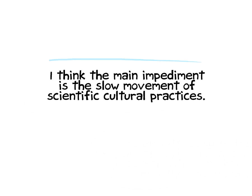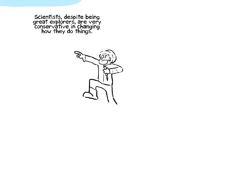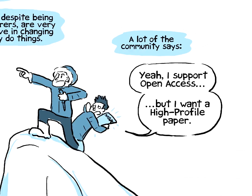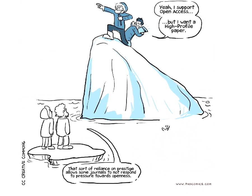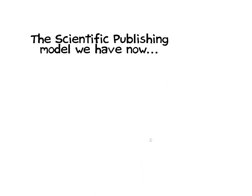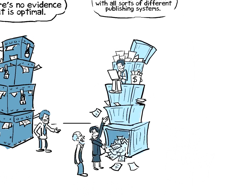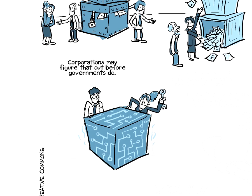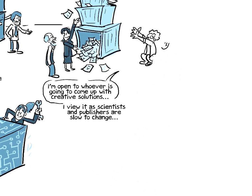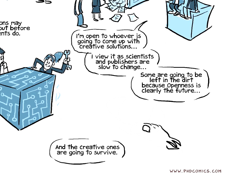I think the main impediment is the incredibly slow movement of scientific cultural practices. Scientists, despite being great explorers in terms of knowledge, are very conservative in terms of changing their practices. Lots of the community says they support openness, but they want a Nature paper. That reliance upon impact factor and the name of the journal does allow some journals to not respond to community pressure towards openness. The scientific publishing model we have now has no evidence that it is optimal. We need to experiment with all sorts of different scientific publishing systems. Corporations may figure that out before governments do. Scientists and scientific publishers who are slow to change are going to be left in the dirt, because openness is clearly the future and the creative ones are going to survive.